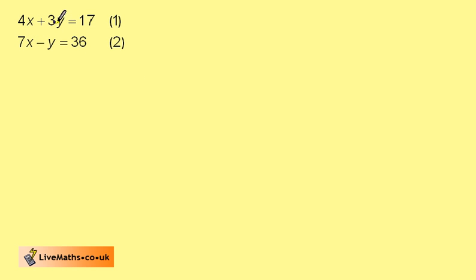We have different numbers of x's and different numbers of y's. We want to get one the same, and we can do this by multiplying equation 2 by 3.